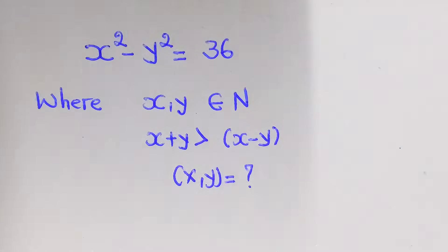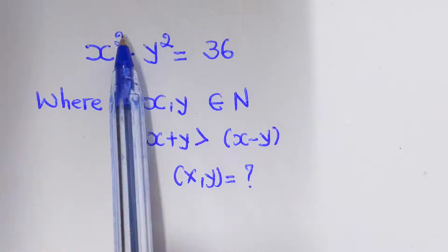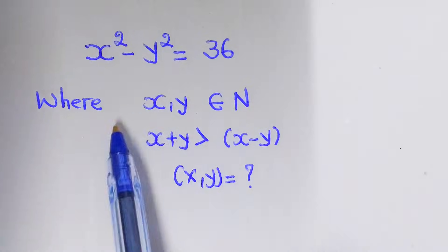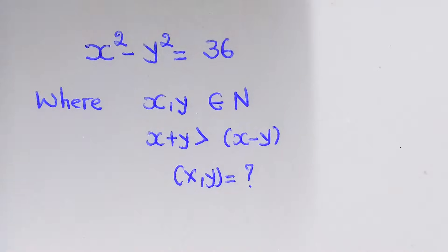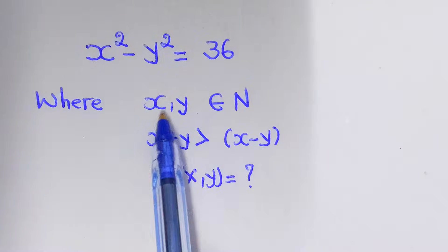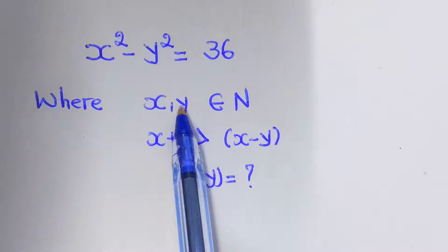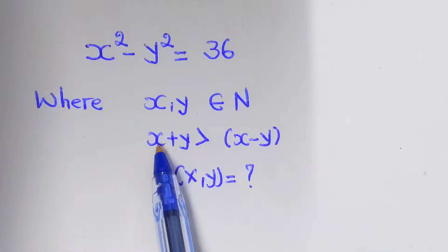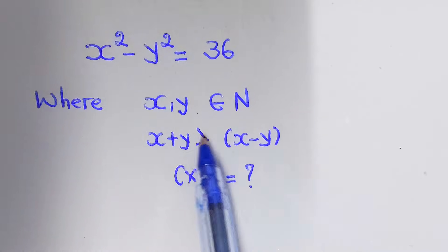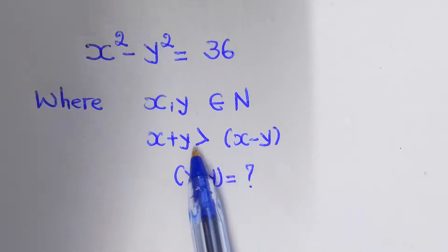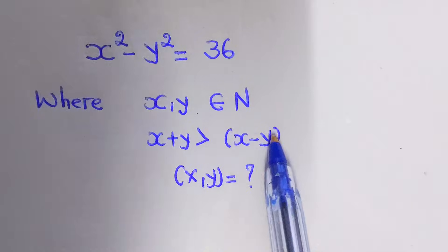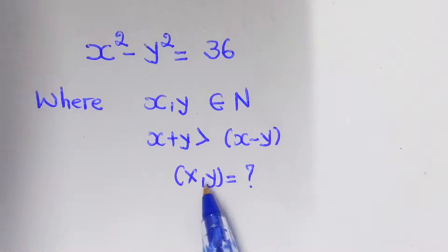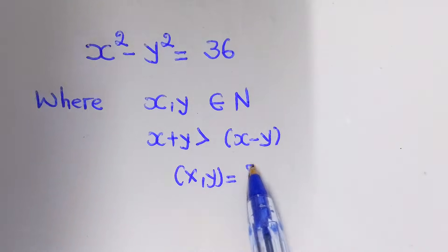Hello everybody, welcome to this platform. Today's video, we have given x squared minus y squared equal to 36, where x and y are elements of natural numbers, and x plus y will be greater than x minus y. And x y equal to what?